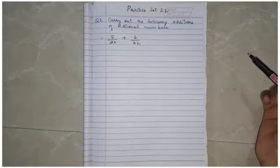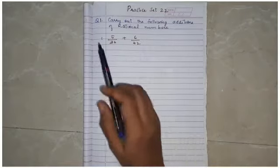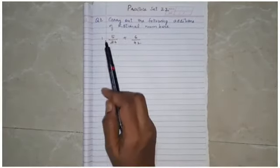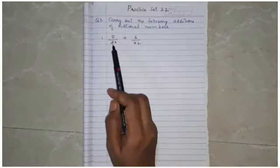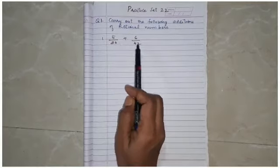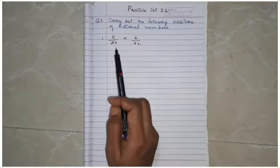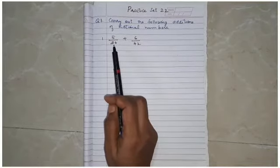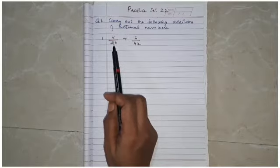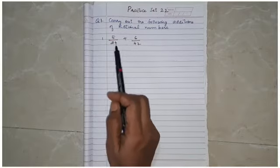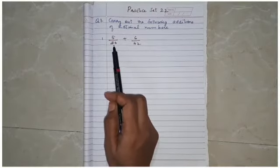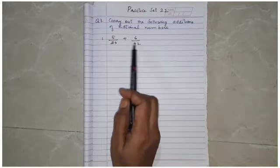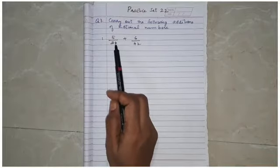Let us start with practice. Our first question is: carry out the following addition of rational numbers. To add these two fractions, the denominators must be the same. Here we have 36 and 42, so we cannot directly add them.